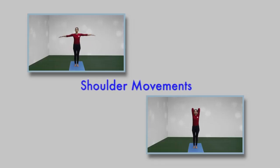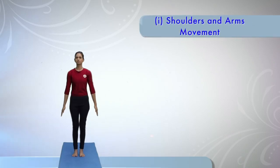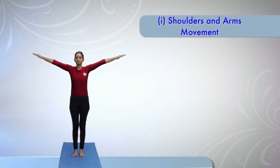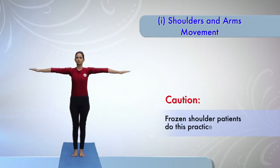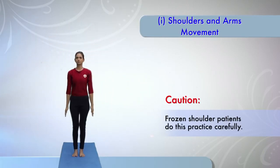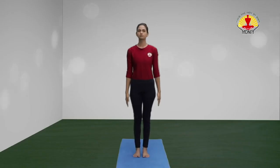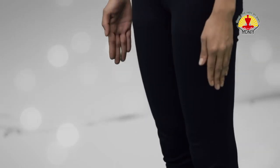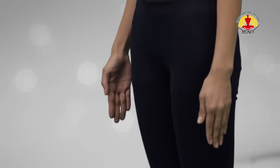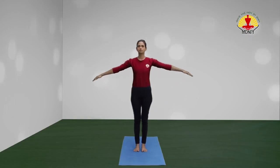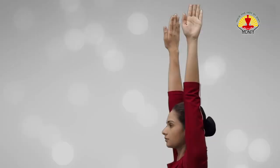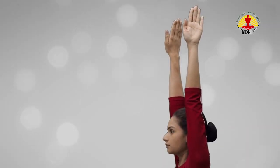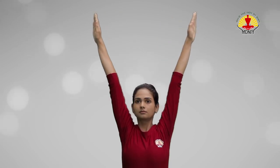Shoulder movements. Shoulders and arms movement. Caution! Frozen shoulder patients do this practice carefully. Start with alert posture, Samasthiti. Keep the fingers together, pointing downwards inwards. While inhaling, move both the arms from side above the head with the palm facing outward. Exhale and bring them down.